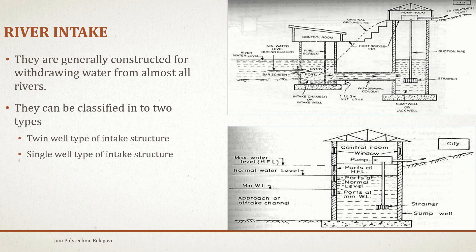Next is river intake. River intakes are generally constructed for withdrawing water from almost all rivers. They can be classified into two types: twin well type and single well type. In the twin well type, you have two intake wells and one intake pipe — similar to the canal intake — and through this the water is sent to the sump well.